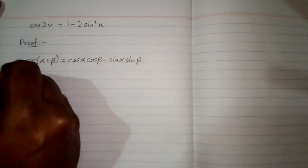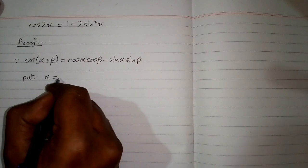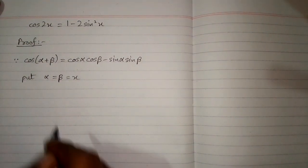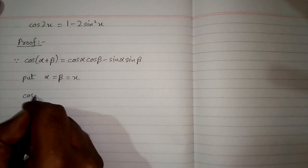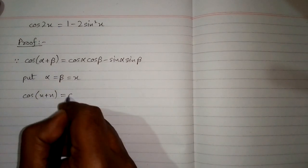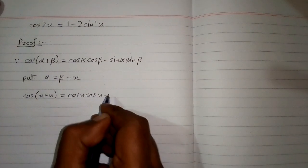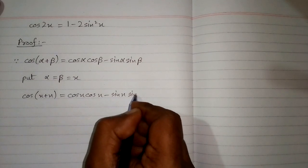Now since we have this formula, we can put x in place of alpha and beta. So we have cos x plus x is equal to cos x cos x minus sin x sin x.